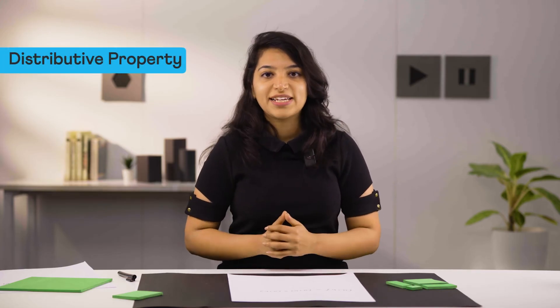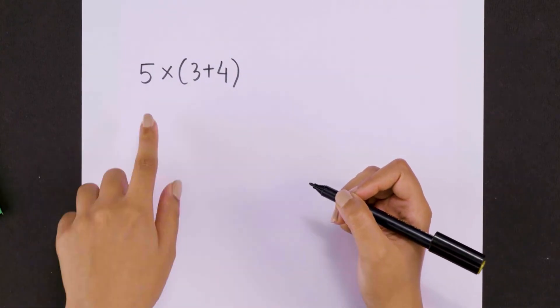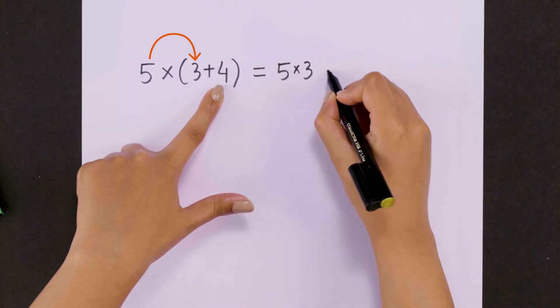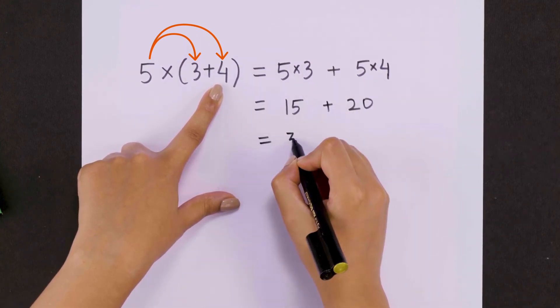we'll use the distributive property, which says if a number is being multiplied by the sum of two numbers, then we multiply it by the two numbers separately and then add their products. For example, to find 5 times 3 plus 4, we'll distribute 5 to 3 and then to 4. That's 15 plus 20 or 35.